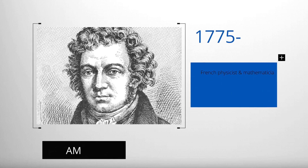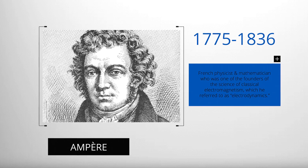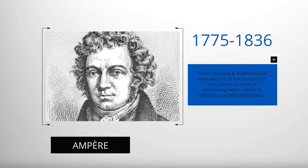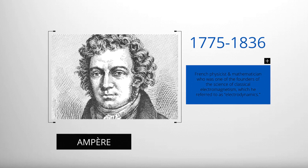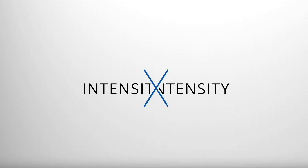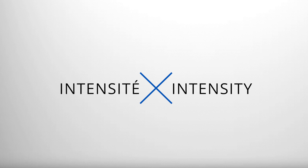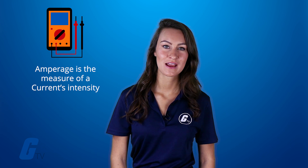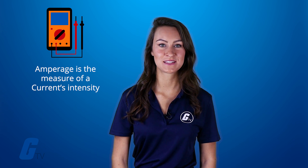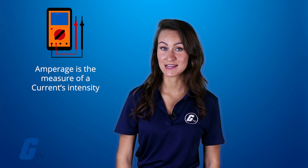Quick history lesson. Current in amps is expressed as the letter I thanks to one of the early pioneers of electrical science, a French physicist named André-Marie Ampere. The French word he used for strength of the electric current was intensity, or intensity in English. Therefore, amperage is the measure of a current's intensity.